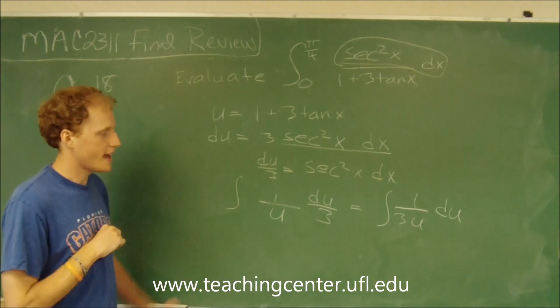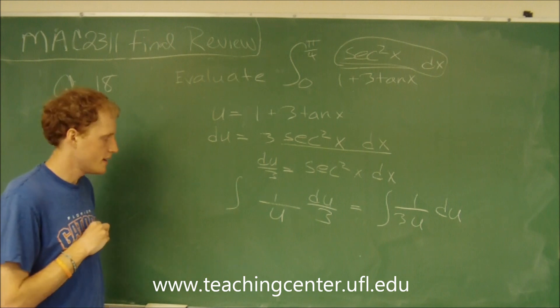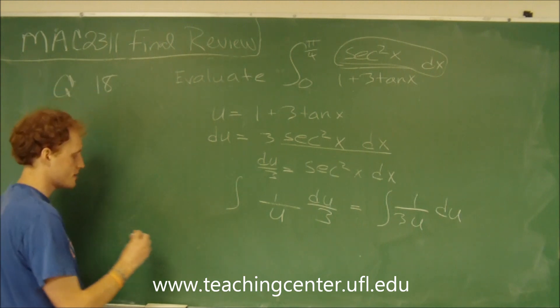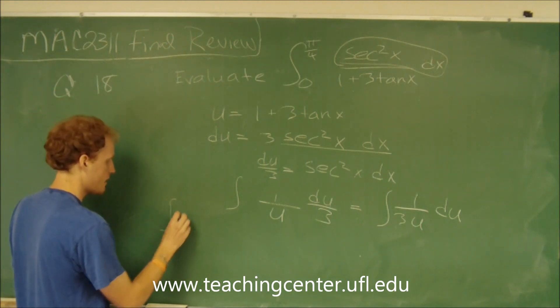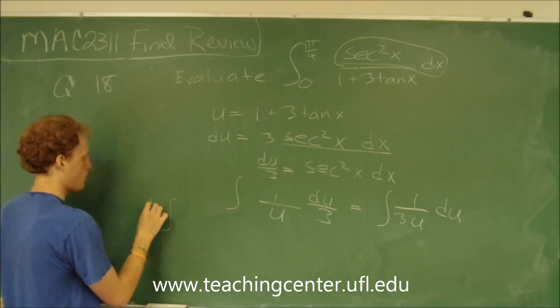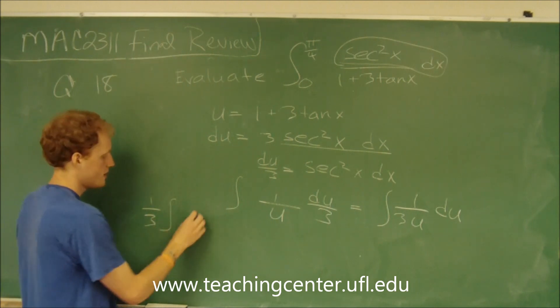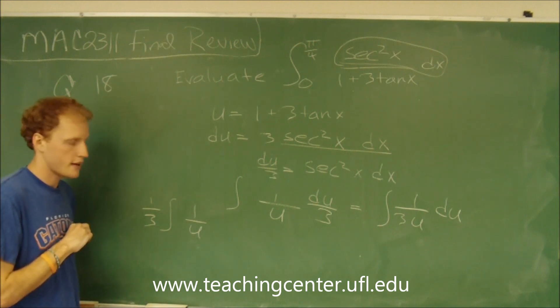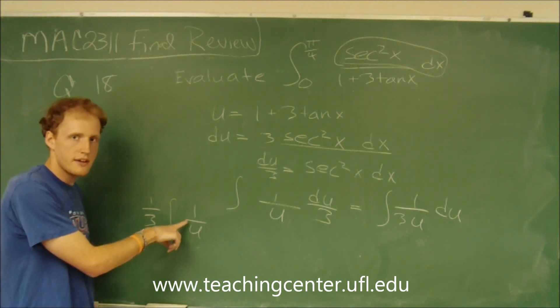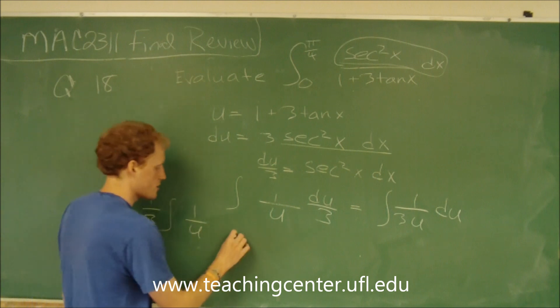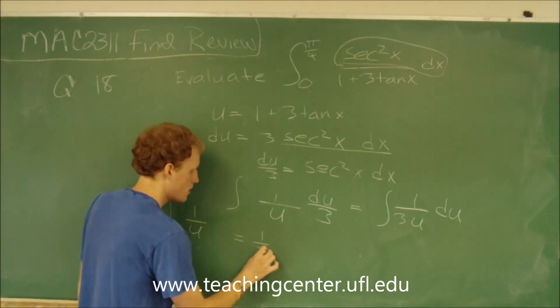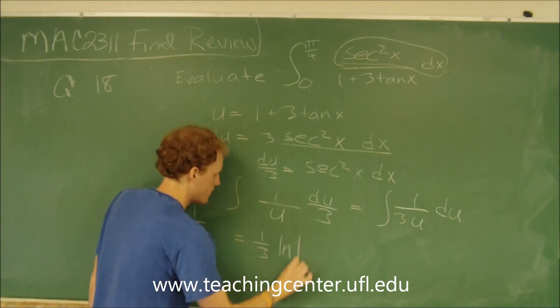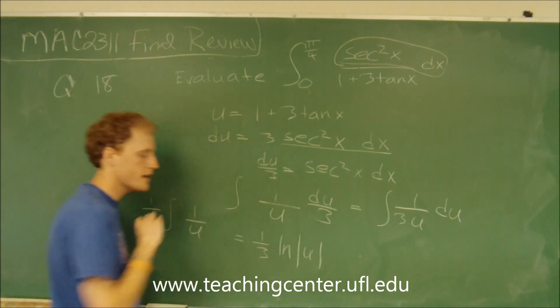So let's find the antiderivative of that. So it's easier to think of it as the integral of 1 third times 1 over u. Then the antiderivative of 1 over u is going to equal the natural log of the absolute value of u.